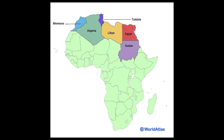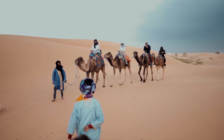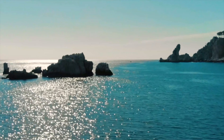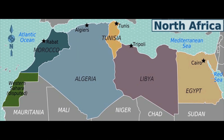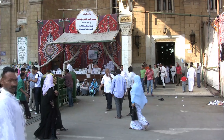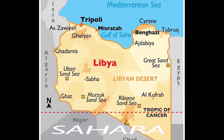Most of Northern Africa consists of the Sahara Desert, which is why the overwhelming majority of the subregion's roughly 250 million people live close to the Mediterranean or Atlantic coast. The subregion is comprised of five countries: Egypt, Libya, Tunisia, Algeria, and Morocco. Egypt is by far the most populous, with more than 104 million people living within its borders, while Libya is the least populous country in the subregion with a population of approximately 6.95 million.